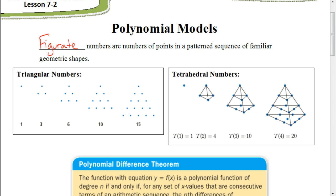But before we get to that, let's look at this first term. Figurate numbers are numbers of points in a patterned sequence of familiar geometric shapes. Now, that term we don't see or use very often, but it's good in case you see it in your assignment. It's basically just numbers that apply to dots or sequences that are dealing with geometric shapes. For example, two popular and common types of figurate numbers would be the numbers dealing with the triangular numbers and the tetrahedral numbers, which we can see the first few numbers in those sequences here in these boxes.